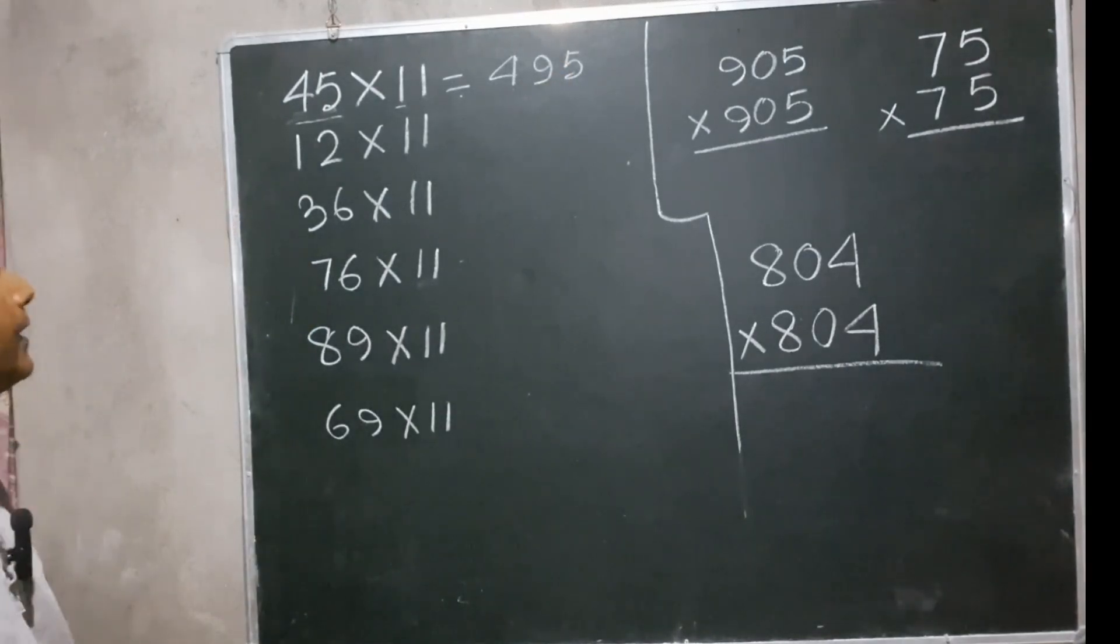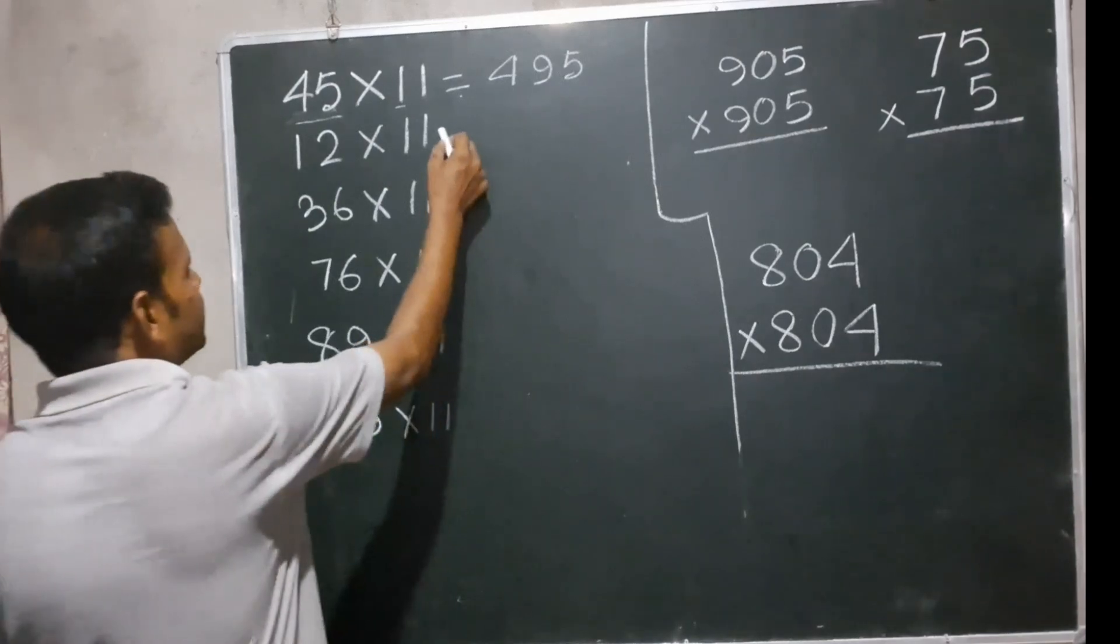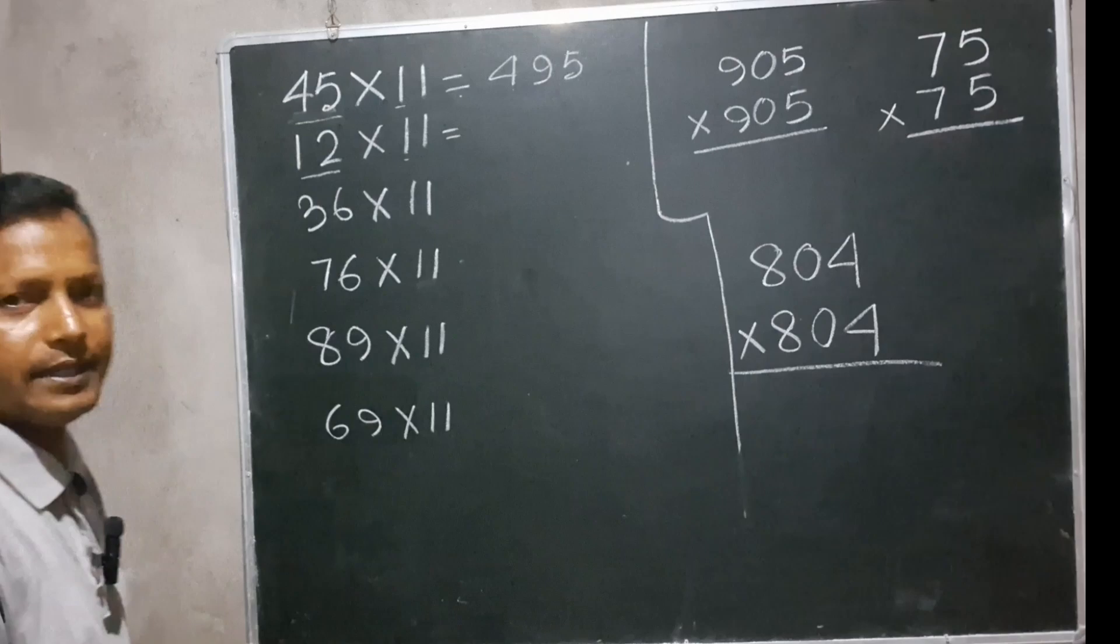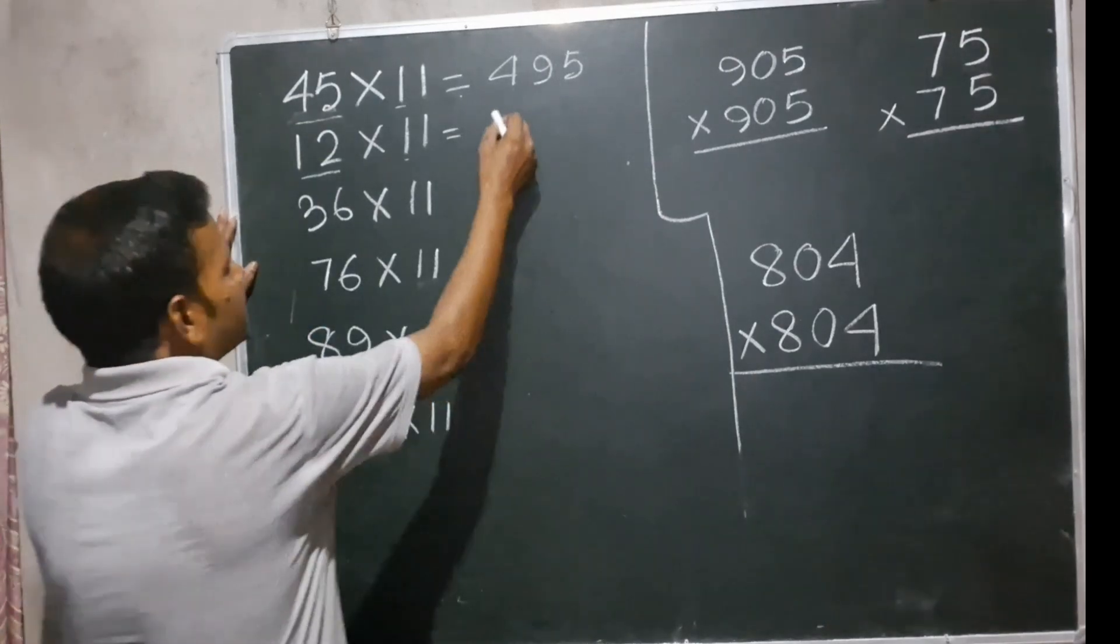Now next one, 12 into 11. Similar, we have to multiply 12 with 11. 12 ones are 12, then 1, 2, then 2 and 1 equals 3, giving us 132.